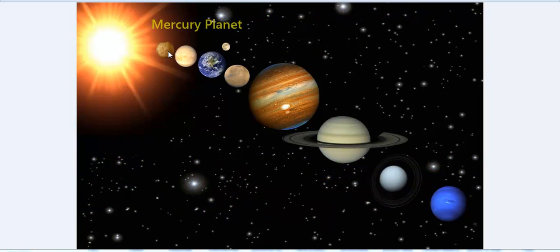Firstly, we will discuss about the Mercury planet. This planet is nearest to the sun and so it becomes very hot during the day, but is very cold at night. It is the smallest planet and has no atmosphere, it has no satellites.